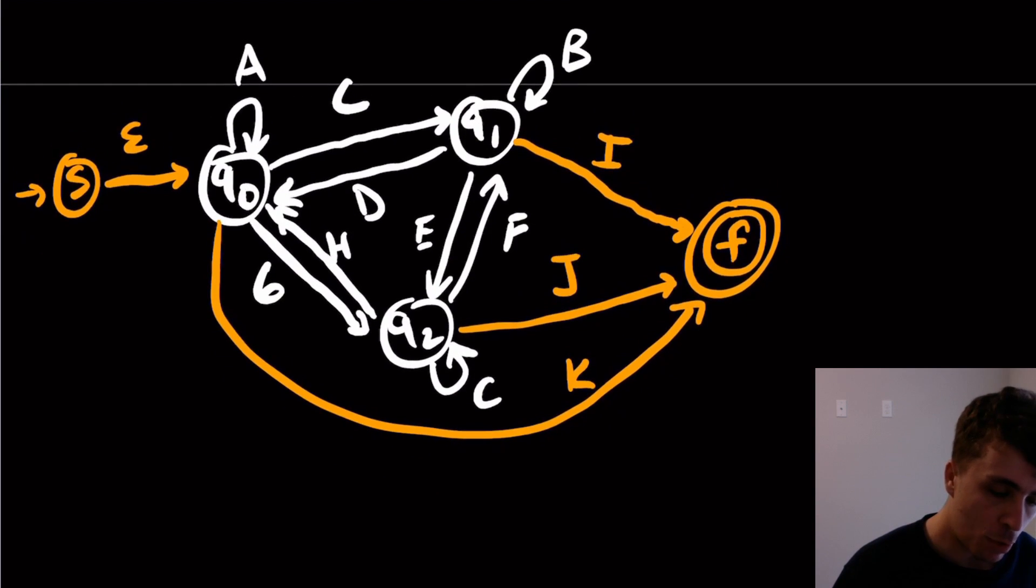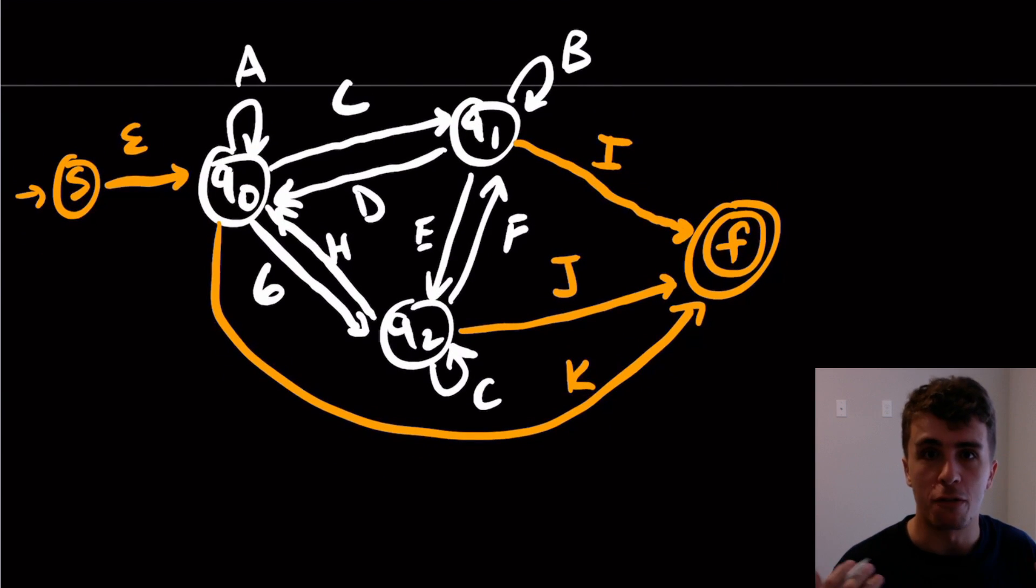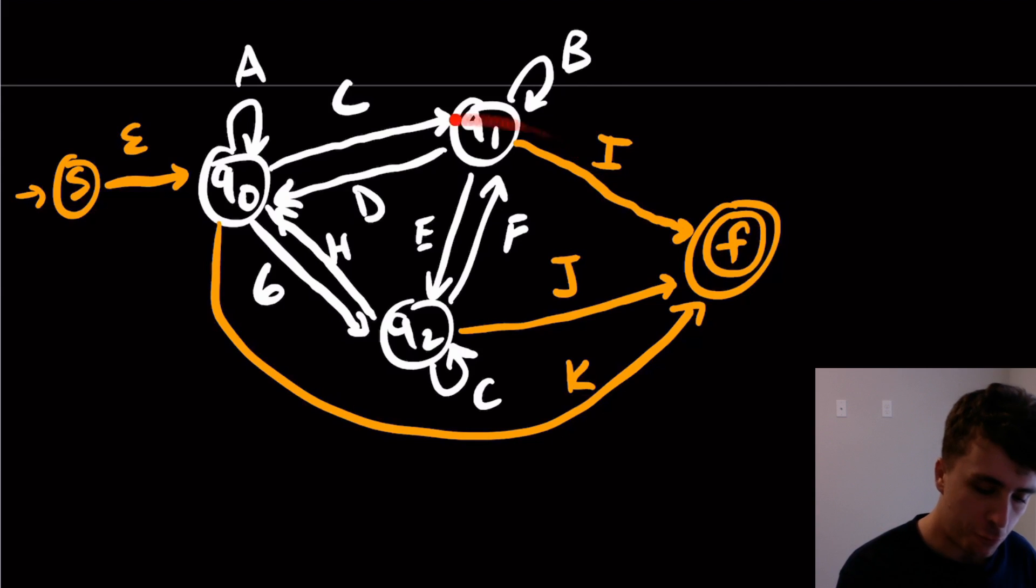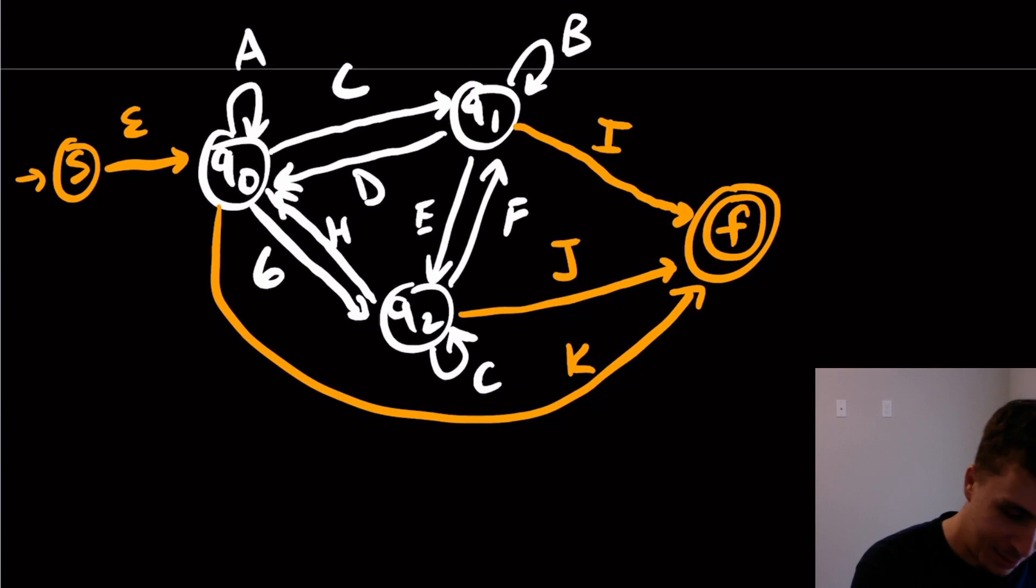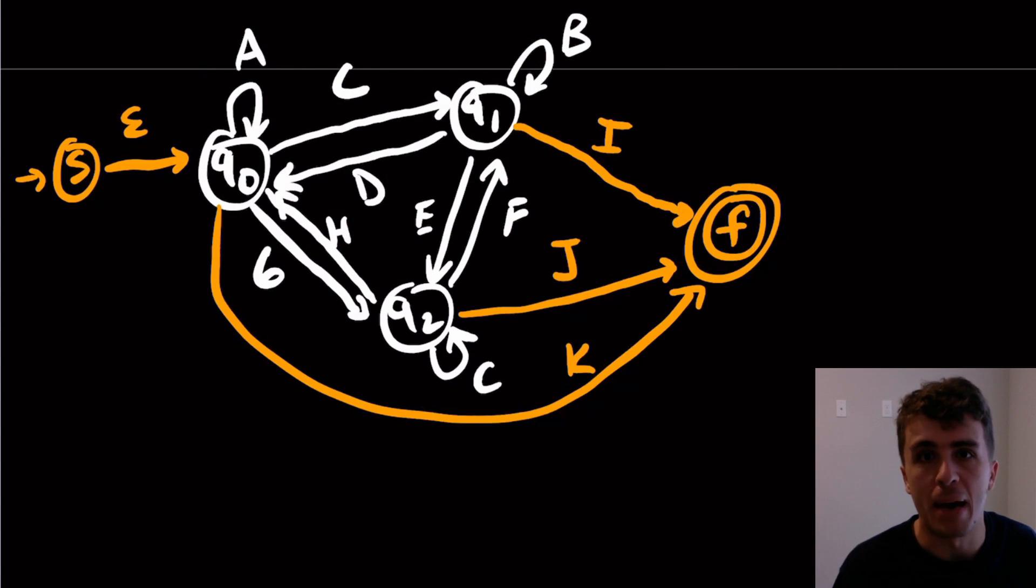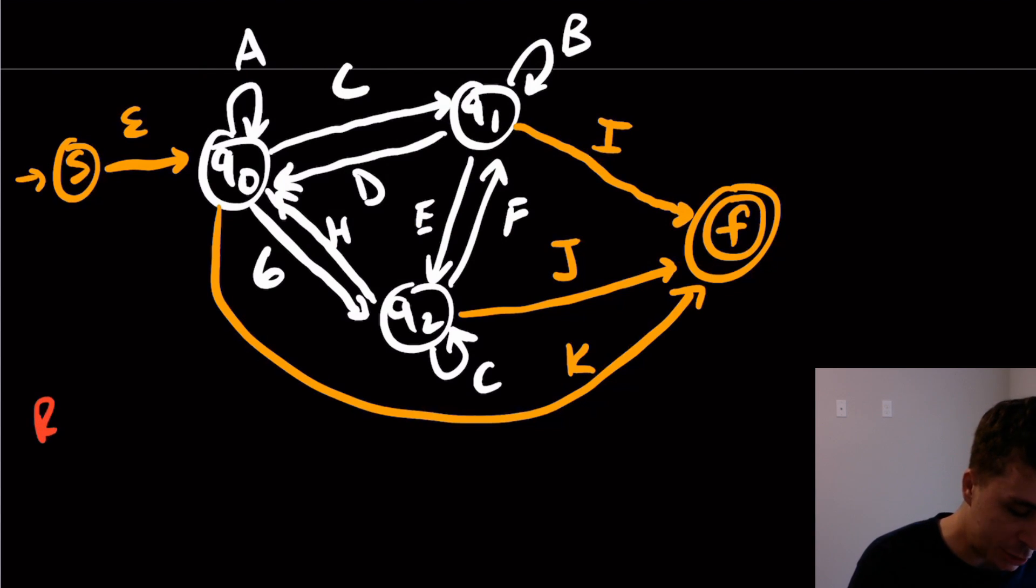So now what we're going to do is we're going to find a regex for this thing in terms of A, B, C, D, E, F, G, H, I, J, and K. No pun intended. So we only have three states to rip. They all are symmetric. So it doesn't actually matter which one we rip here. So let's just rip q0, just as an example.